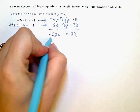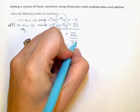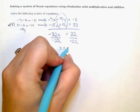Then if I divide both sides by negative 22 to solve for x, I'm left with x equals negative 1.